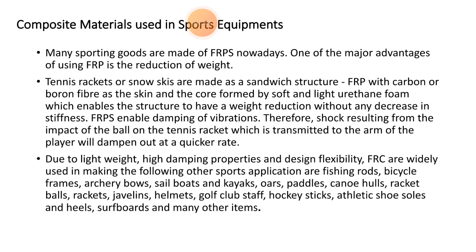Many sporting goods are made using FRP. One of the major advantages of using FRP is reducing weight, and due to this weight reduction, sportsmen benefit greatly. Tennis rackets and hockey sticks are made as a sandwich structure — FRP with carbon or boron fibre as a skin and a core formed by soft and light urethane foam, which enables the structure to achieve weight reduction without any decrease in stiffness.